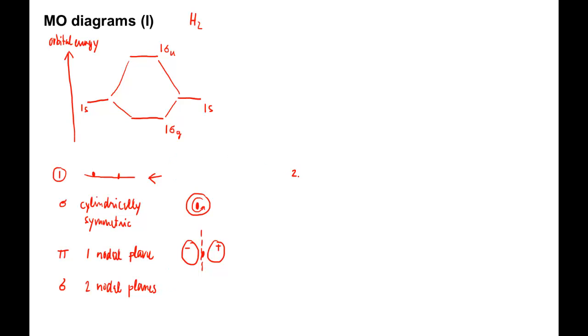Next in the label, the subscripts G and U. They indicate the inversion symmetry of the molecular orbital, that is, its behavior under spatial inversion through the center of the bond. Look at the molecule and compare the value of the MO at a specific location, for example the top right, to its value at the location obtained by inverting through the center of the bond to the bottom left.